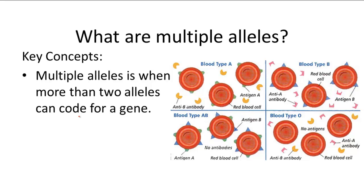What are multiple alleles? Blood type is also an example of multiple alleles, which is when more than two alleles code for the same gene.